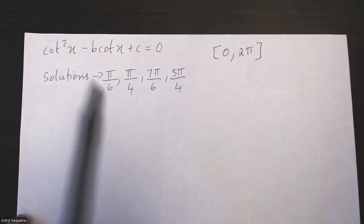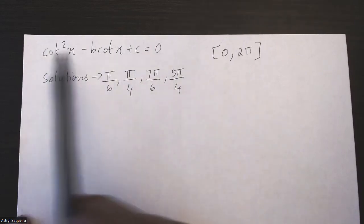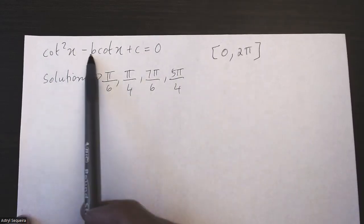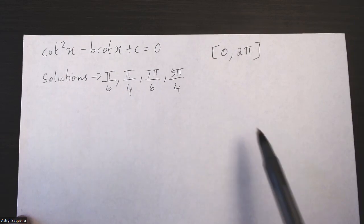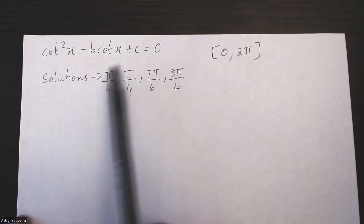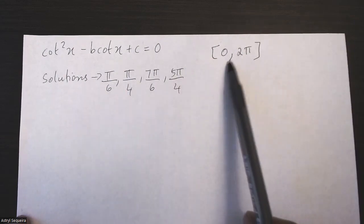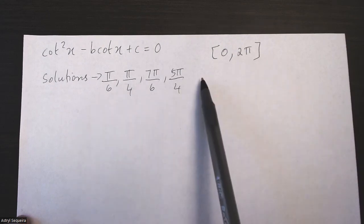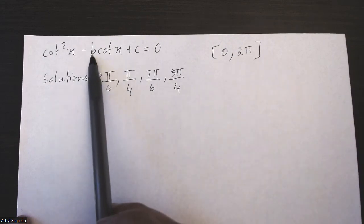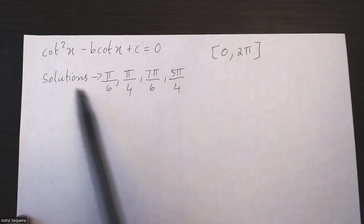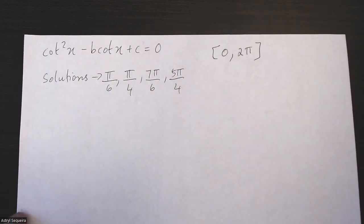All right, so in this video, we are given this quadratic trig equation. Cot squared x minus b cot x plus c equals 0, and four of the solutions to this equation between 0 and 2π are given, and we need to find the values of b and c that make these solutions true for this equation.